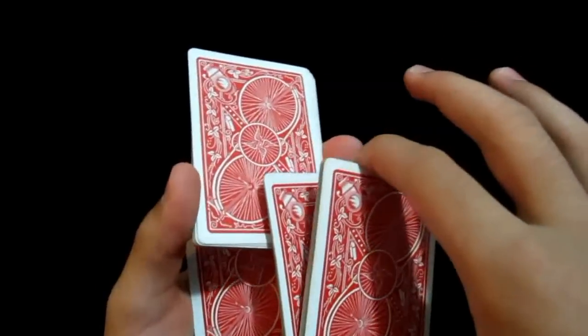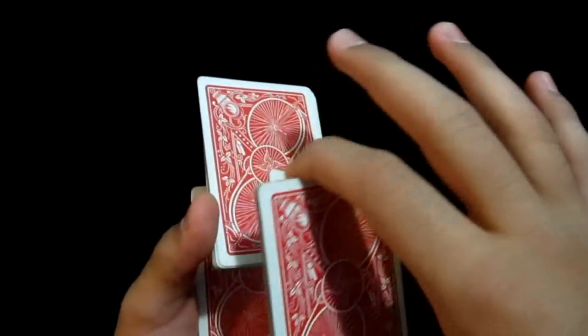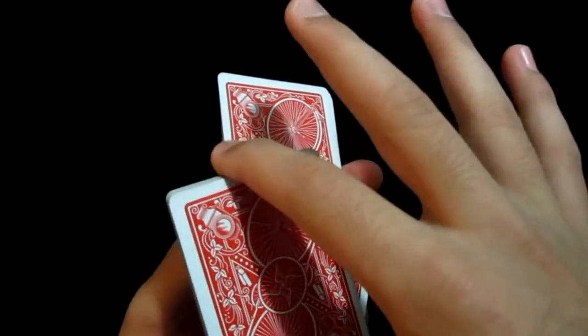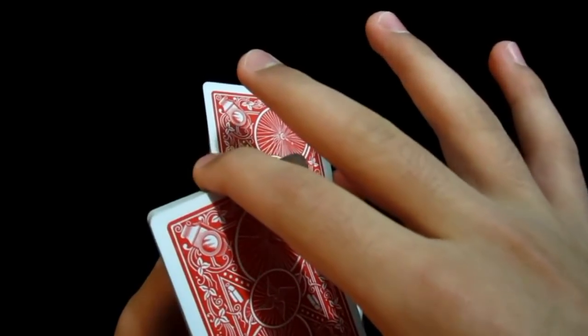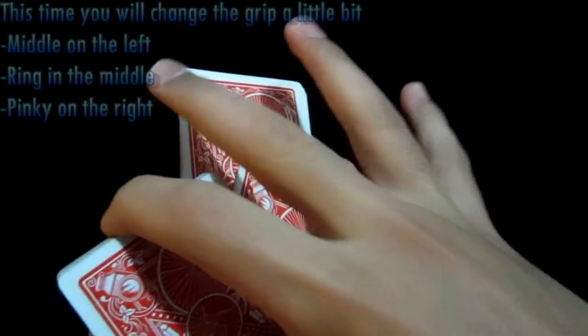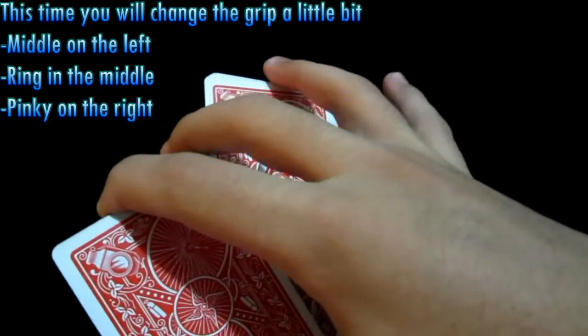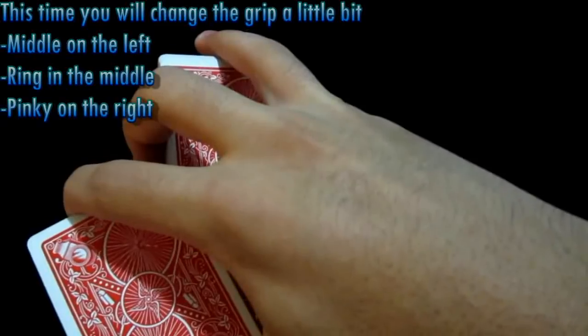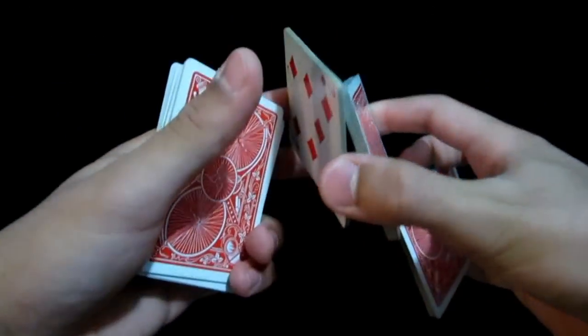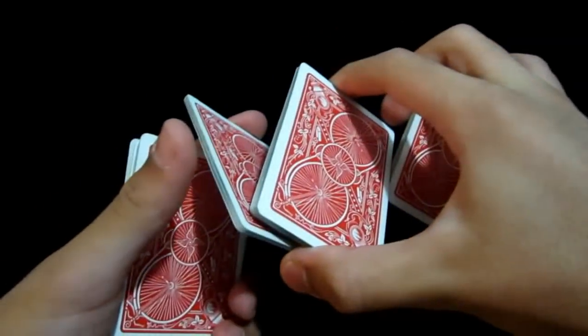You're going to transfer, change this grip a little bit. You're going to come over, except by using your index, middle, and ring, you're going to use your middle, ring, and pinky. And you're going to come over. Middle on the left, ring finger in the middle, and pinky on the right. And you're going to grip this packet. You're just going to pull it one more time. So you have these three packets just like that, and this one between those three fingers.